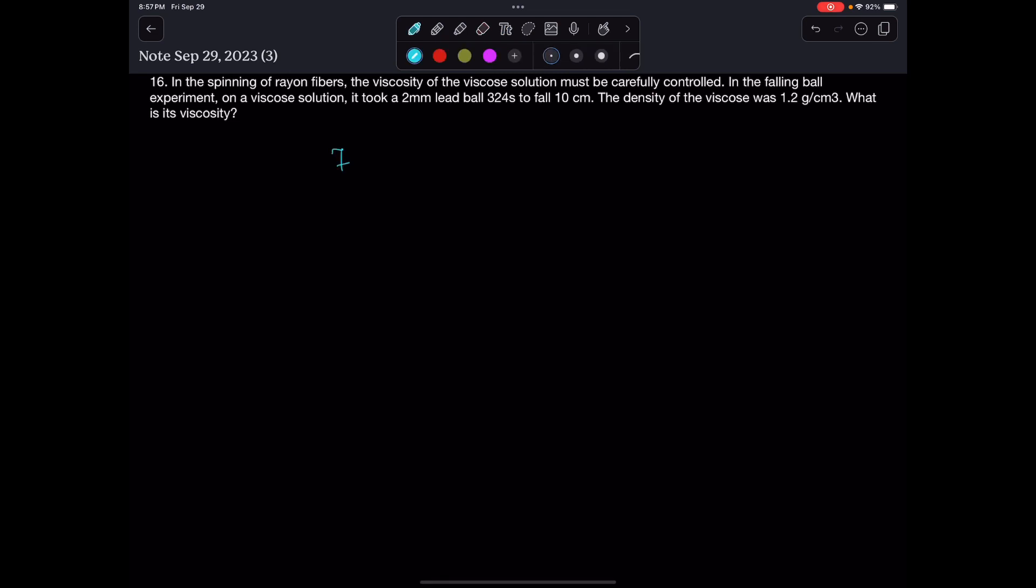For a falling ball viscometer, the viscosity is given by eta equals 2 over 9 times r squared over u bar times g times rho minus rho zero, where eta is the viscosity.